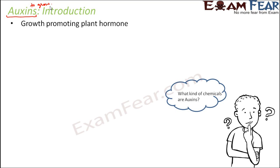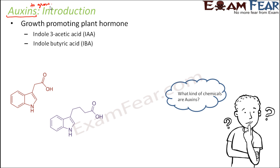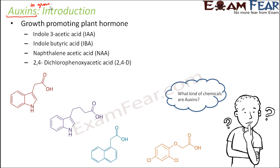Now the question is: what kind of chemicals are auxins? These are chemical messengers or chemical substances present inside a plant. If you think of their chemical structures, they are: Indole Acetic Acid, abbreviated as IAA; Indole Butyric Acid, abbreviated as IBA; Naphthalene Acetic Acid, abbreviated as NAA; and 2,4-Dichlorophenoxyacetic Acid. You can see their chemical ring structures. They are not very simple, but they are important for plants.